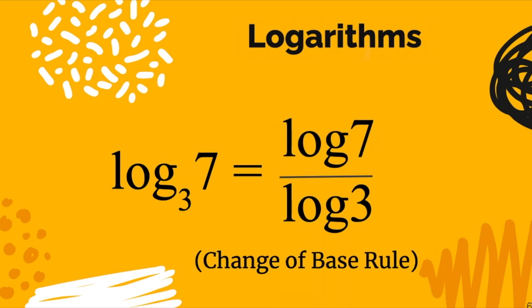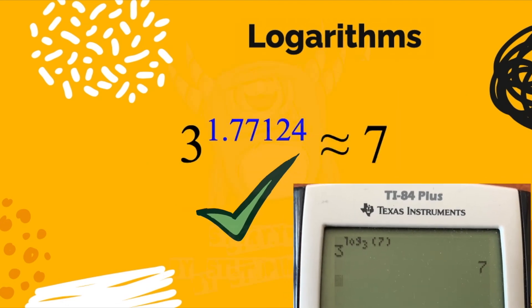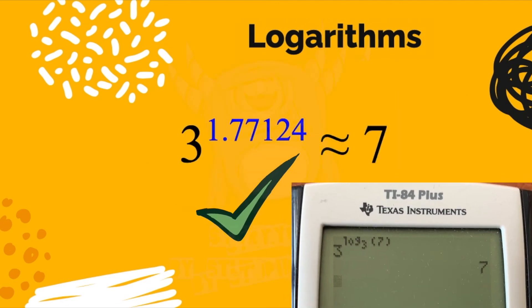Some calculators are not able to do different bases. So you have to use the change of base rule. It turns out log base 3 of 7 is the same thing as log 7 divided by log 3. That happens to be base 10, by the way, and your calculator does have a log base 10 button. So you would type in log of 7, close your parentheses, divided by log of 3 equals, and you see the same decimal.